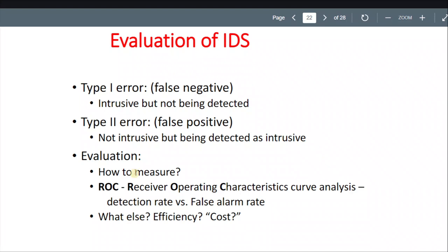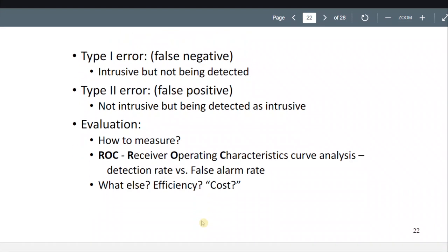Evaluation — how to measure the IDS. We have the ROC curve — Receiver Operating Characteristics curve analysis. It plots detection rate versus false alarm rate. Efficiency and cost are also factors you can take into account.